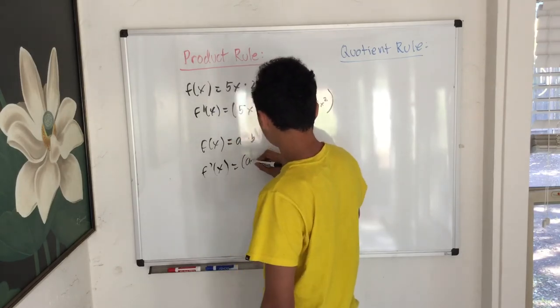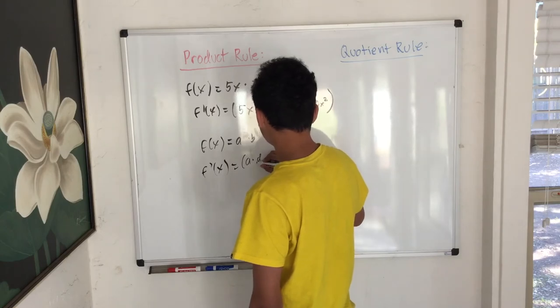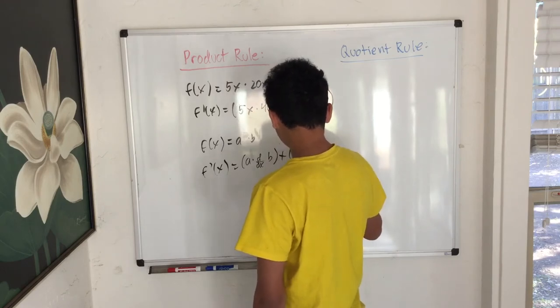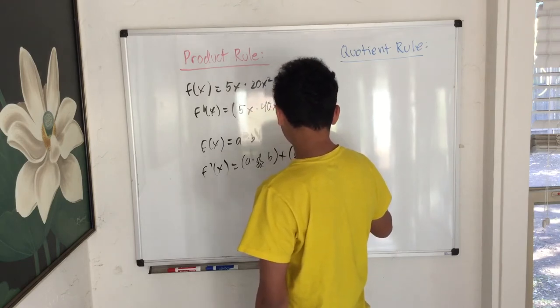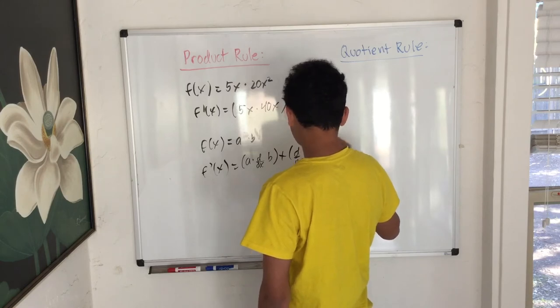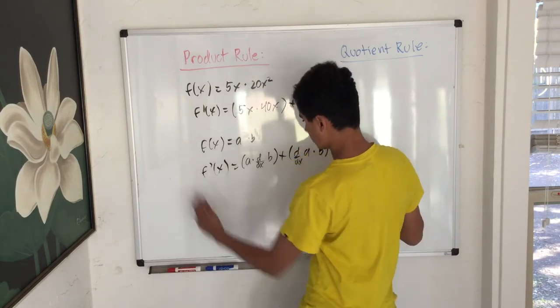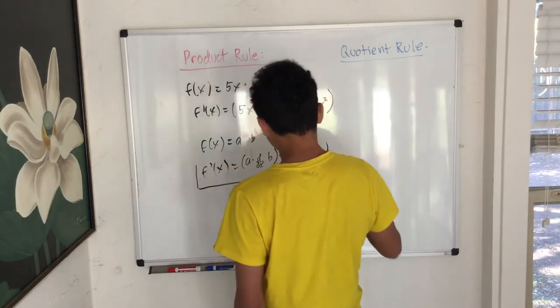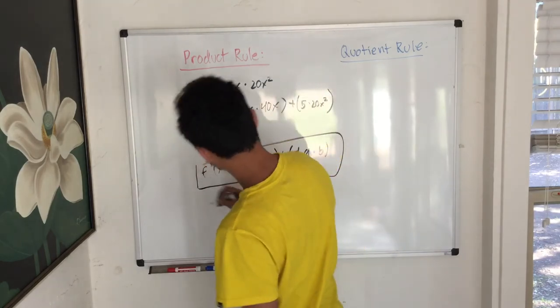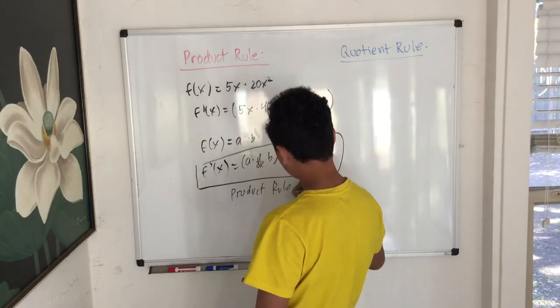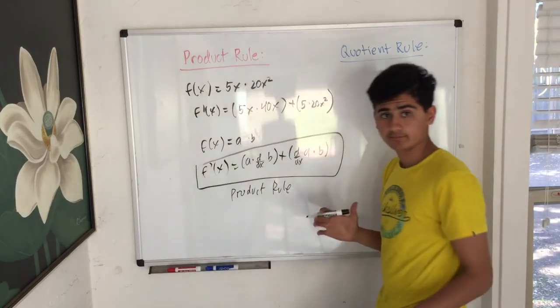So it's going to be a times derivative d/dx of b plus d/dx of a times b. Simply said by definition, this is the product rule. This is the product rule. Very simply.